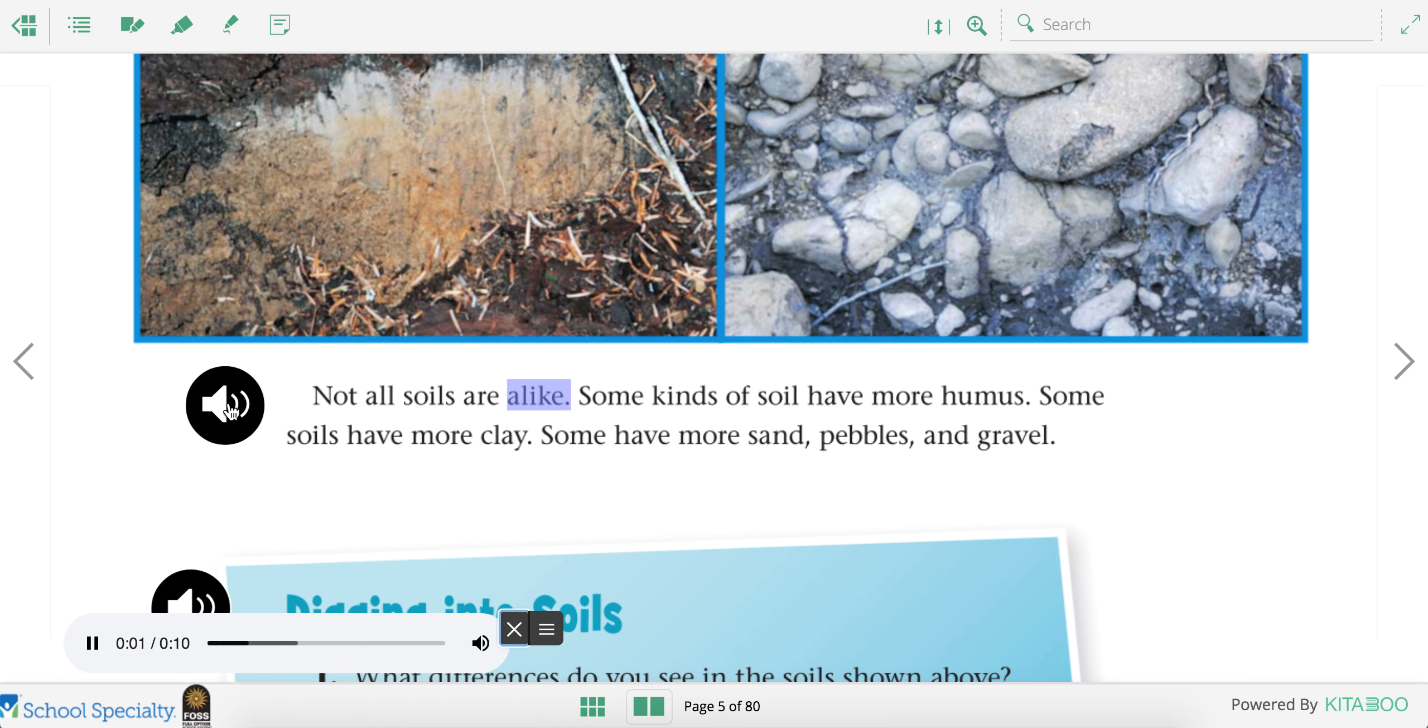Let's listen to it read. Not all soils are alike. Some kinds of soil have more humus. Some soils have more clay. Some have more sand, pebbles, and gravel.